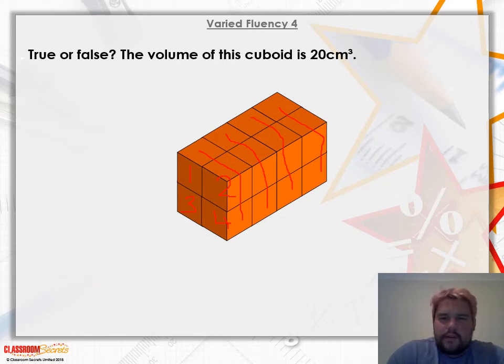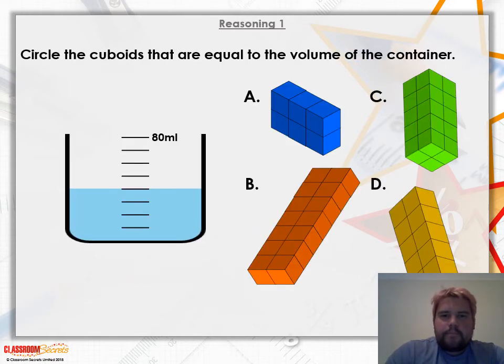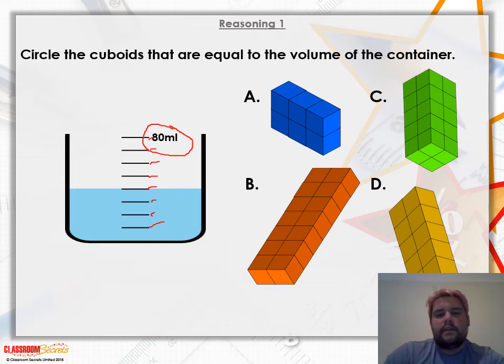And why not? We'll have a look at one of the reasoning problem solvings whilst we're here. Great question. Circle the cuboids, plural. So it's going to be more than one and equal to the volume of the container. Now the volume of container, we've got 80 milliliters up at the top notch and we've got one, two, three, four, five, six, seven, eight. It's perfect. If you want to know what the divisions are, 80 divided by eight will be 10 milliliters between them. So this one would be 10 milliliters all the way up to this one. So I can tell you this one here is 40 milliliters. So the volume would be 40 centimeters cubed.